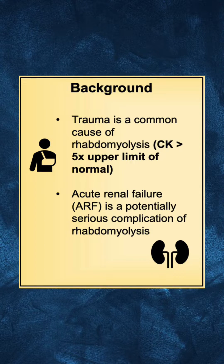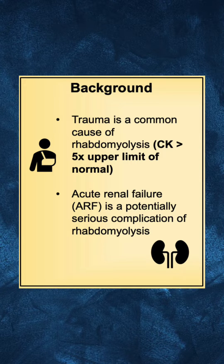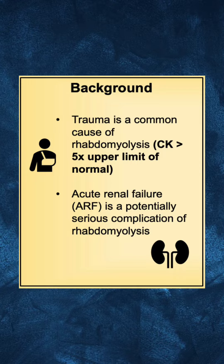Common causes of muscle damage associated with rhabdomyolysis include crush injury, prolonged immobilization, drugs and toxins, and ischemia reperfusion injury. The most common systemic complication of rhabdomyolysis is acute renal failure, likely due to multiple factors including intravascular hypovolemia and nephrotoxicity from myoglobin and its breakdown products.